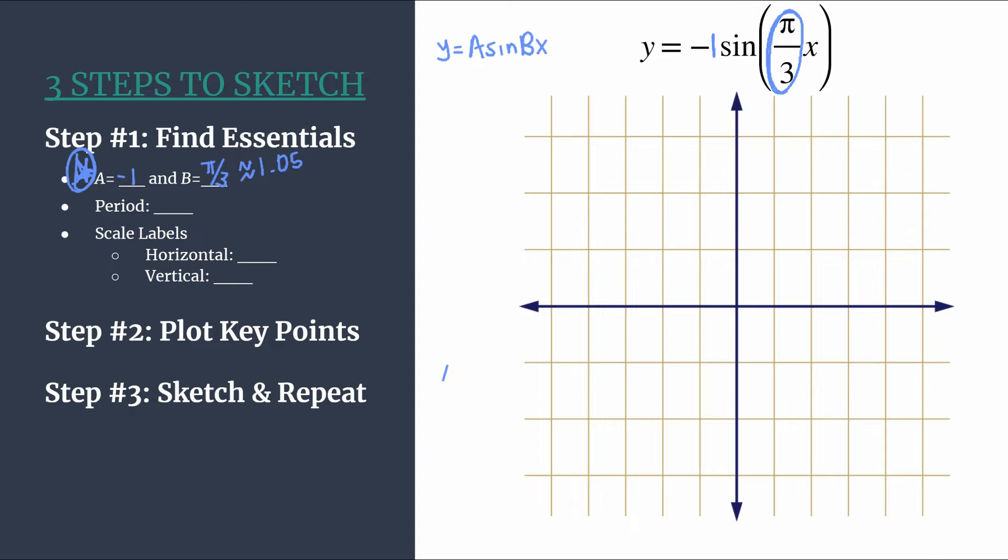And b tells us several important things. First of all, I like to remind myself that b will be how many cycles happen between zero and 2π. So we should have just a little bit more than one cycle happening in that space.